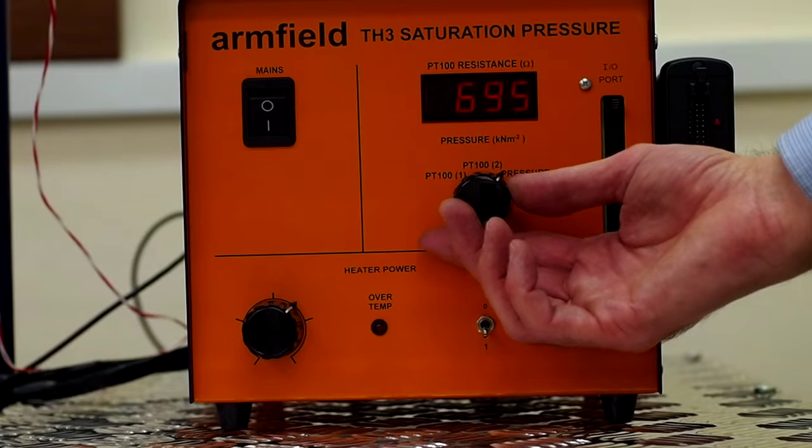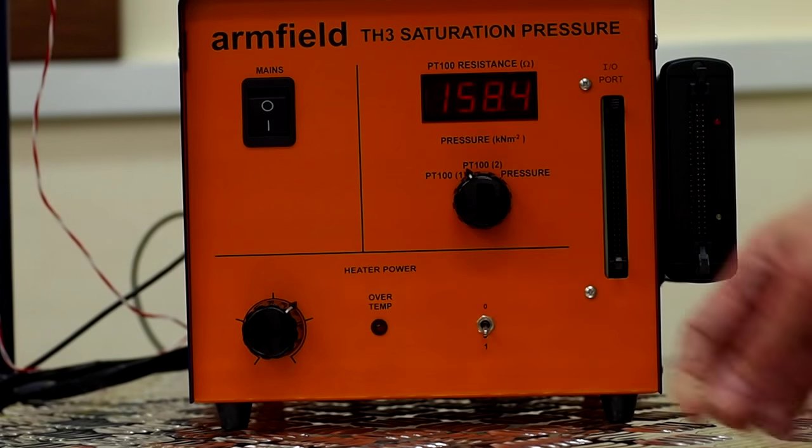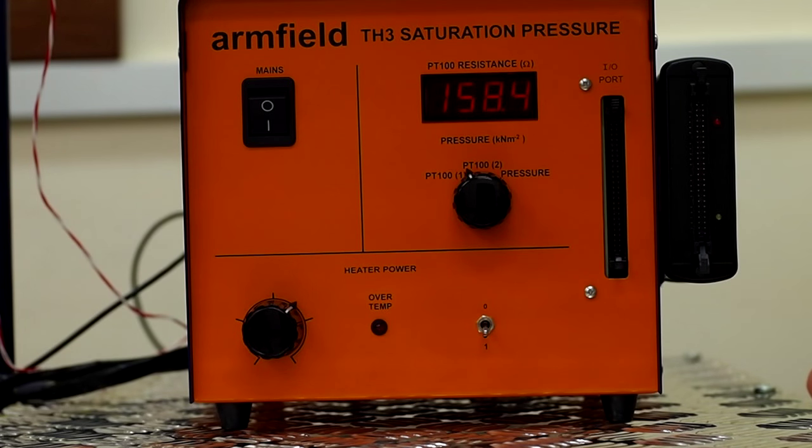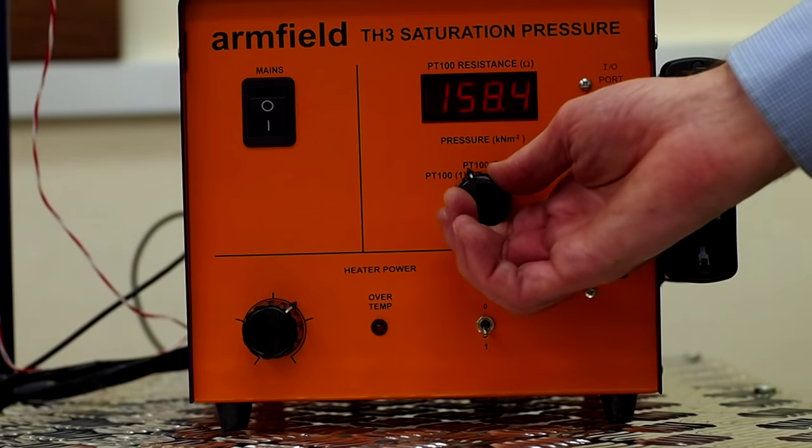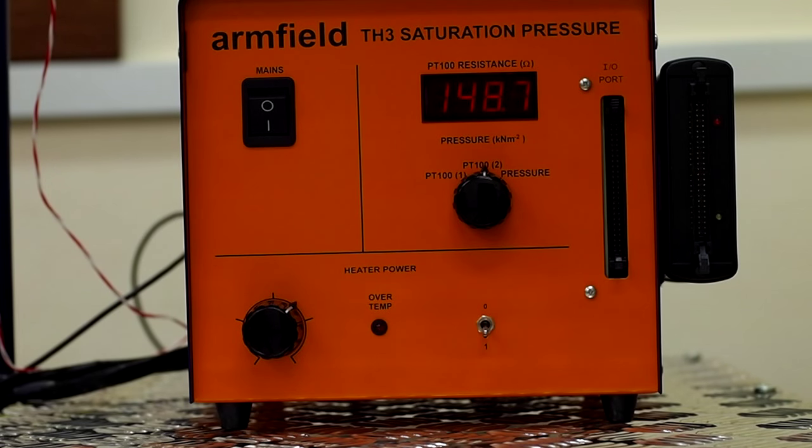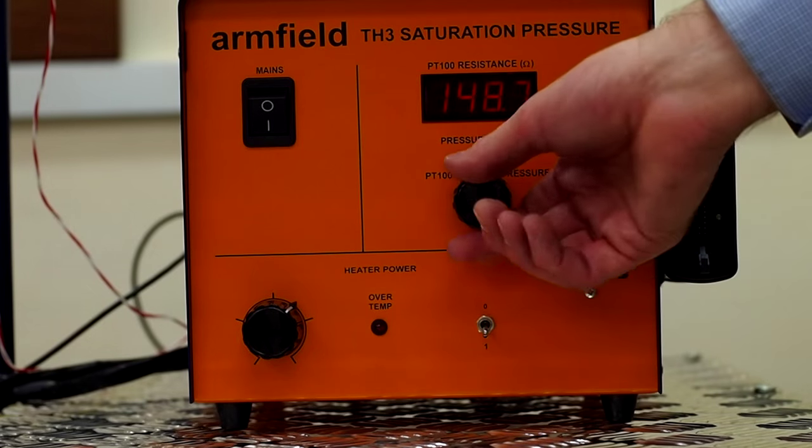The display control knob switches the display between temperature sensor 1, temperature sensor 2, and the pressure sensor. The temperatures are displayed in ohms and the pressure in kPa.